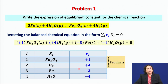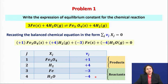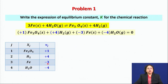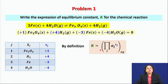To reiterate: positive stoichiometric coefficients in the balanced algebraic equation correspond to products of the reaction, and negative stoichiometric coefficients correspond to reactants. Using this information, the equilibrium constant K is defined as the product of the activities of each component raised to the power of its stoichiometric coefficient νⱼ, evaluated at equilibrium.